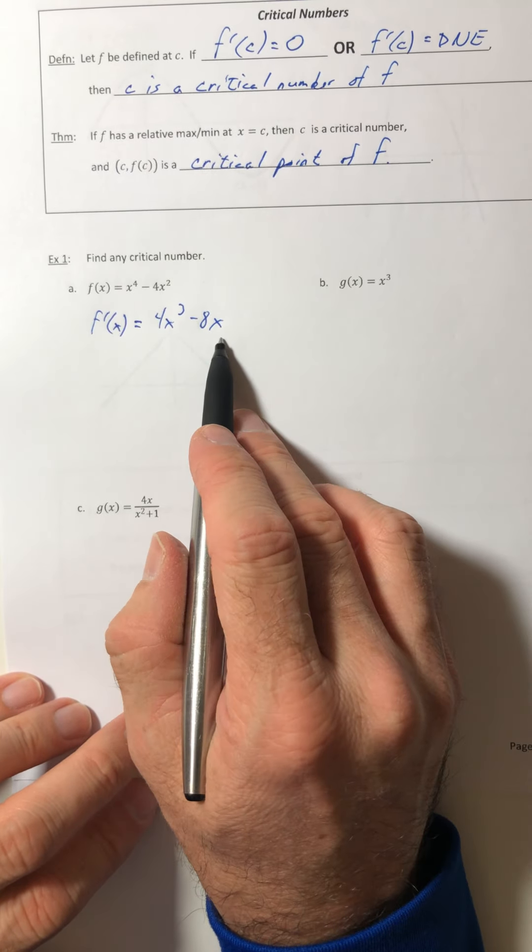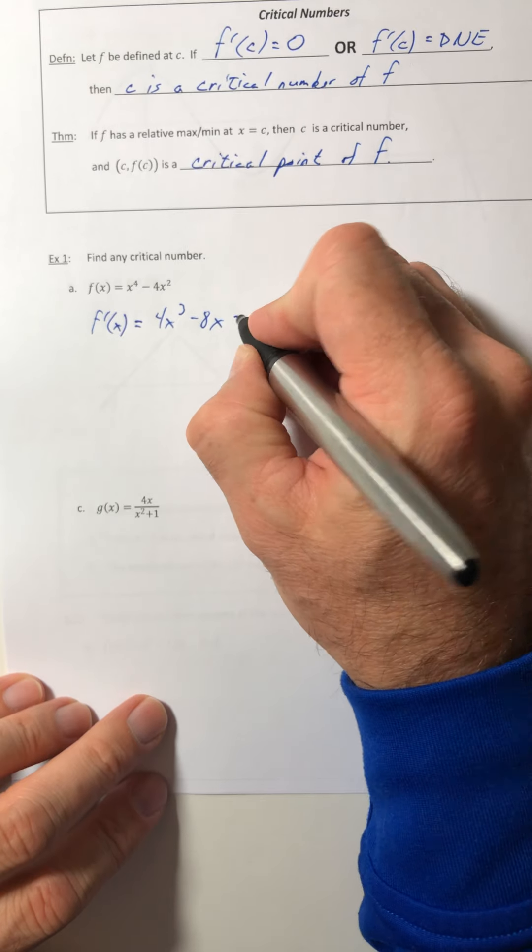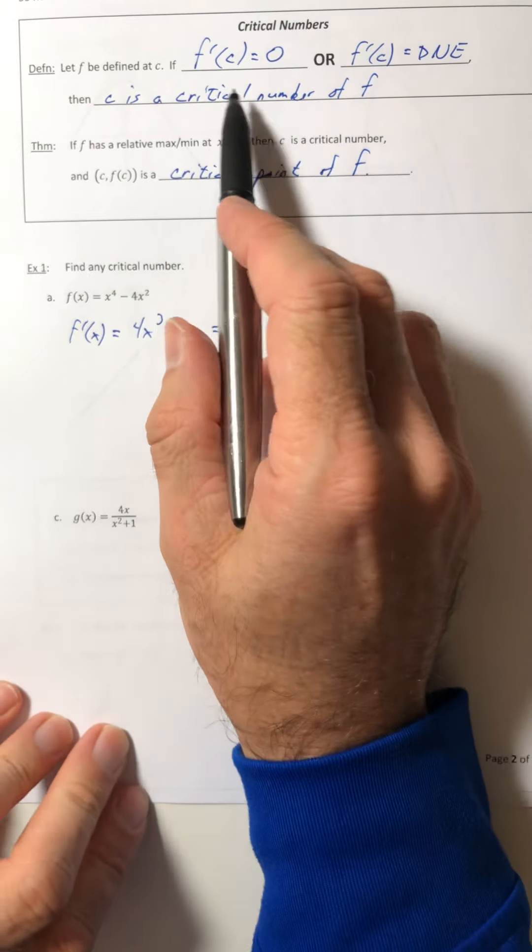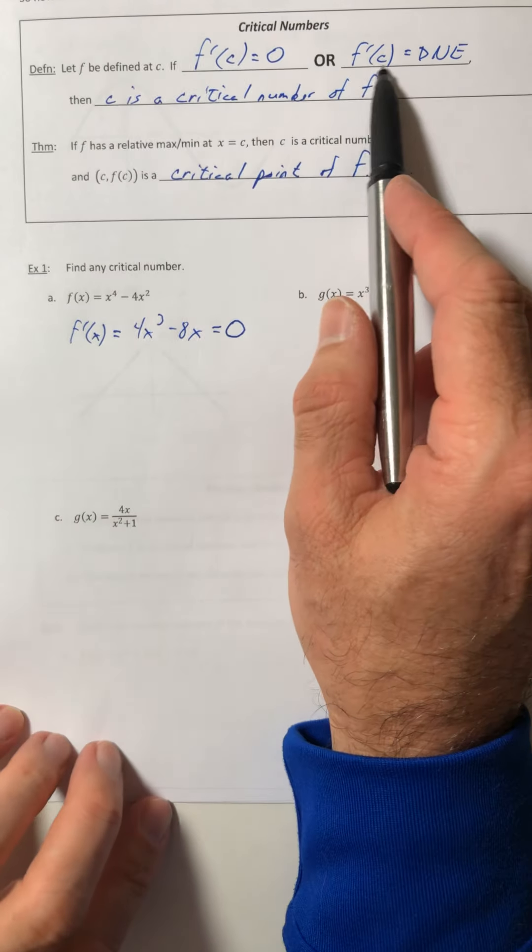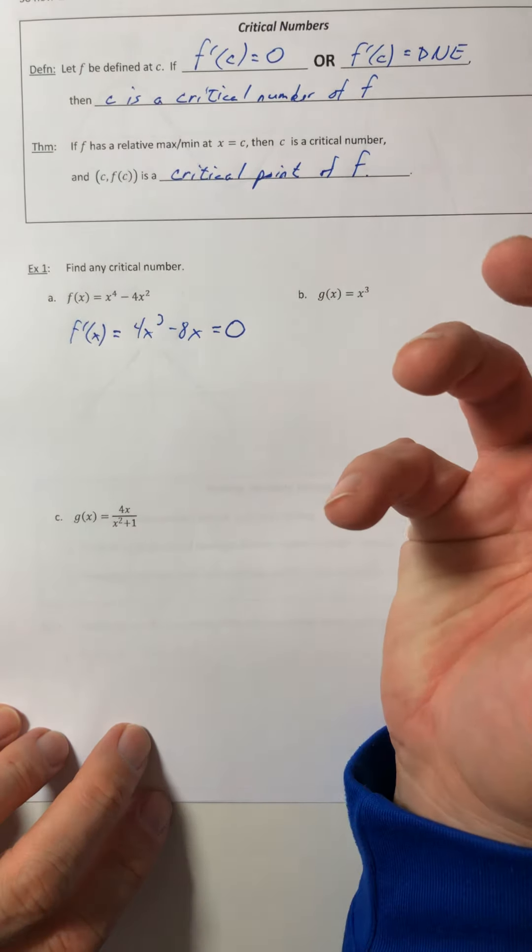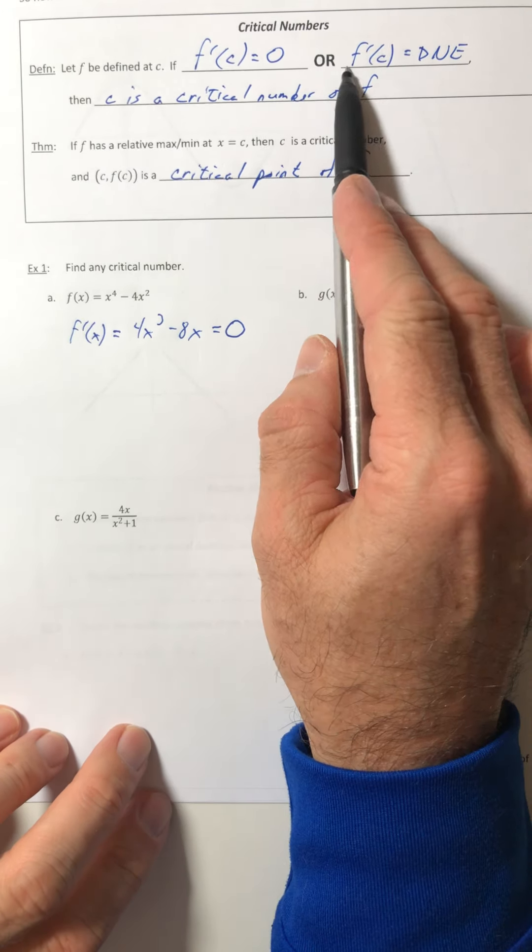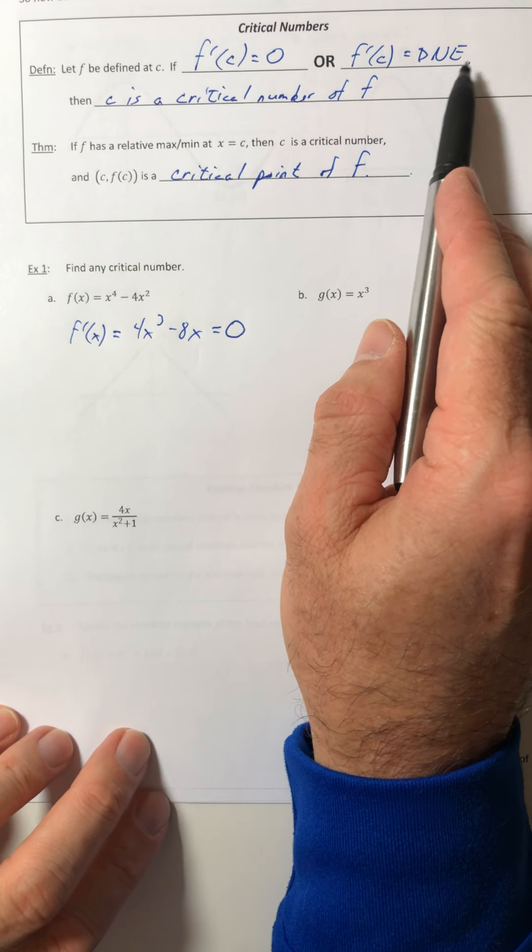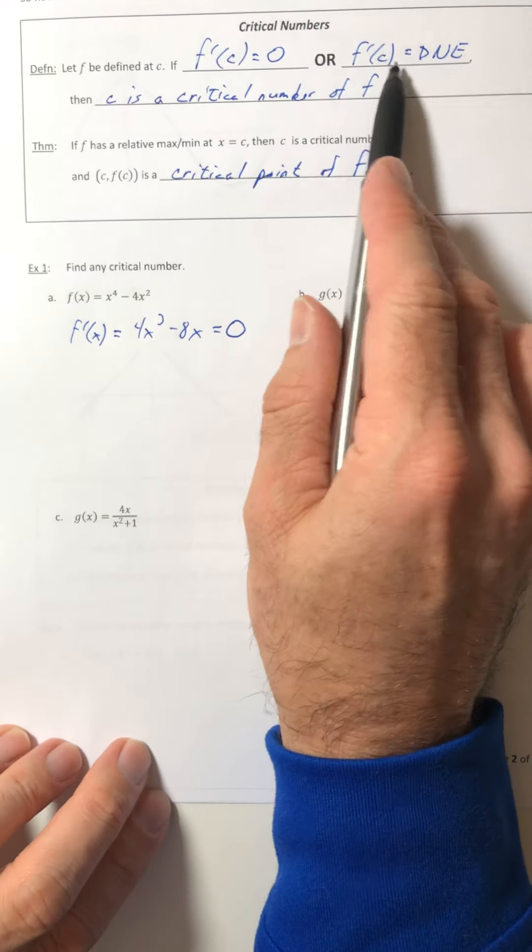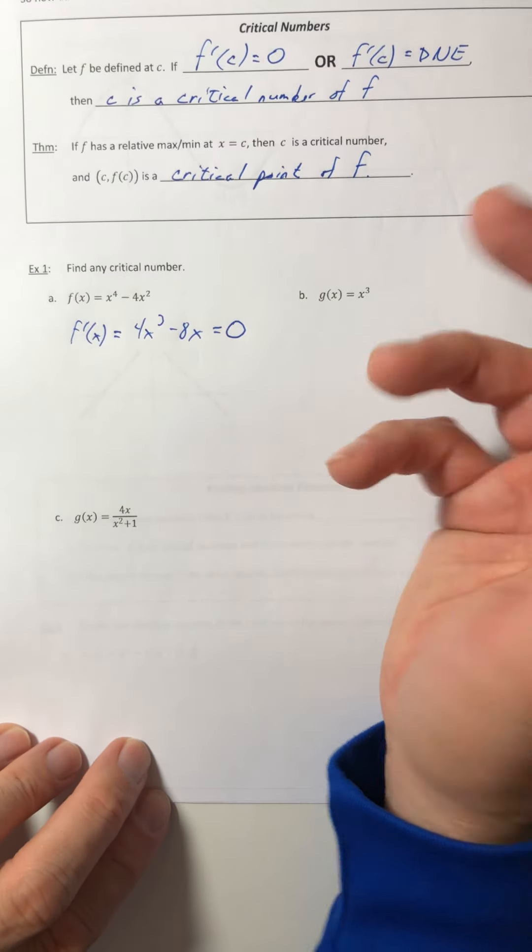So once you get your derivative, we're going to set it equal to zero. And you're going to do two things. You're going to figure out where the derivative is zero, or where it's possibly undefined. Now they both don't have to occur. You might just find out where the derivative is undefined, or you might just find out where the derivative is zero. But sometimes it's both happening at once.